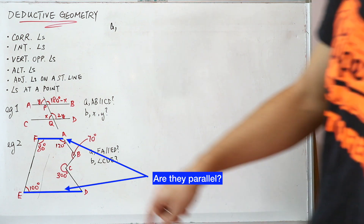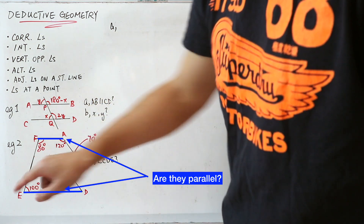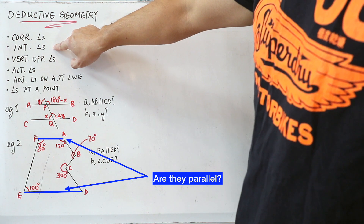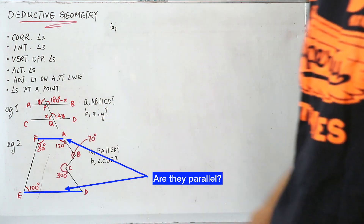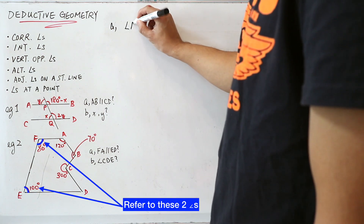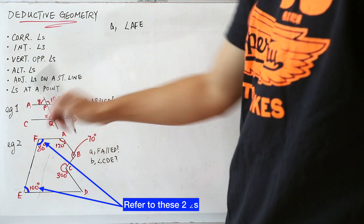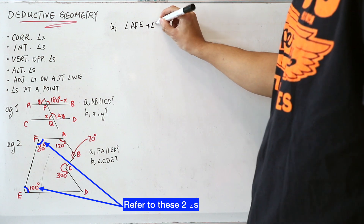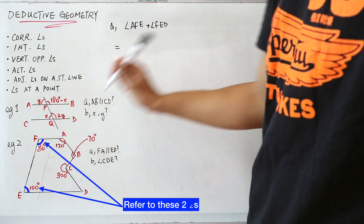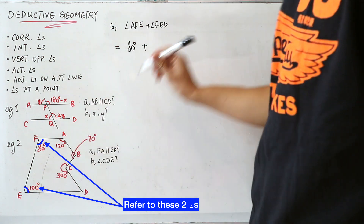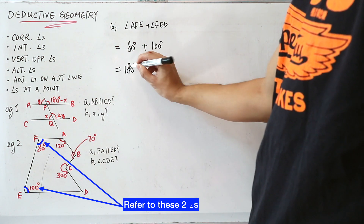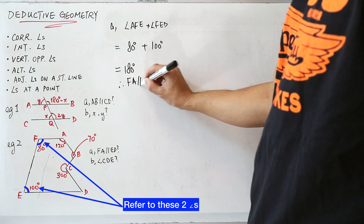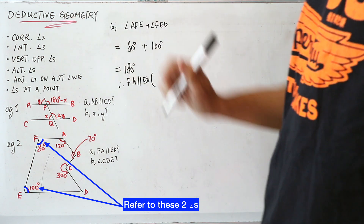For part A, whether FA is parallel to ED — this should be pretty obvious. You can see that 80 degrees plus 100 degrees equals 180 degrees. So angle AFE plus angle FED equals 80 plus 100 equals 180 degrees. We know FA must be parallel to ED. The reason is interior angles supplementary.